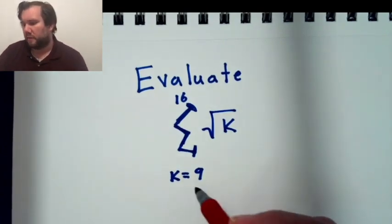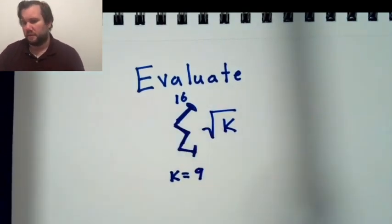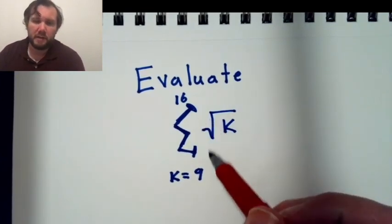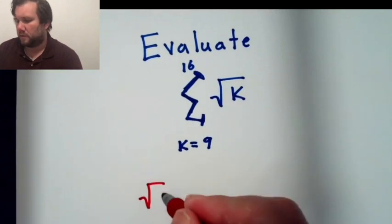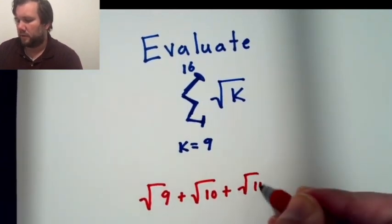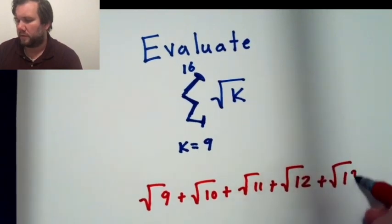Let's look at evaluating the sum from k equals 9 to 16 of square root of k. We're going to be taking square root of every integer from 9 to 16 and adding these up. So this would become square root of 9 plus square root of 10 plus square root of 11 plus square root of 12 plus 13 plus,